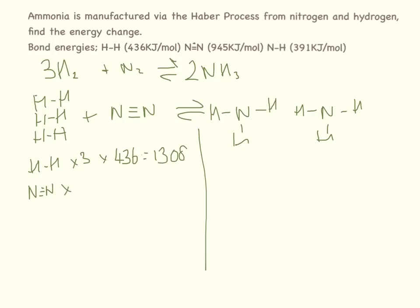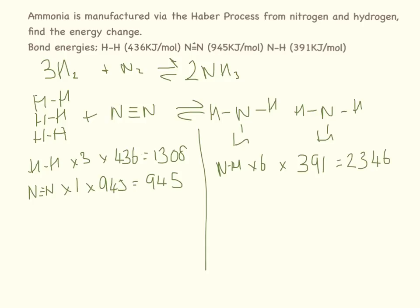The N≡N triple bond energy is 945 kJ/mol: 1 × 945 = 945. On the product side we have six N-H bonds (three per NH₃ molecule, two molecules). The N-H bond energy is 391 kJ/mol: 6 × 391 = 2,346. Adding the reactant side totals: 1,308 + 945 = 2,253 kJ/mol.